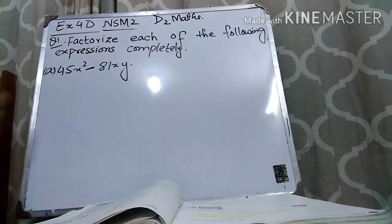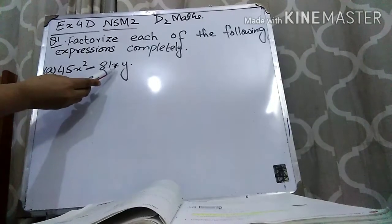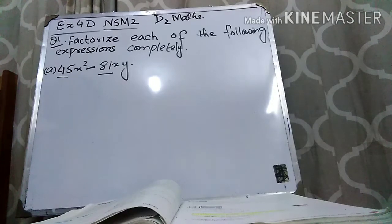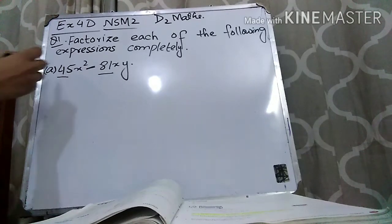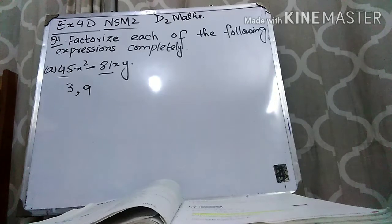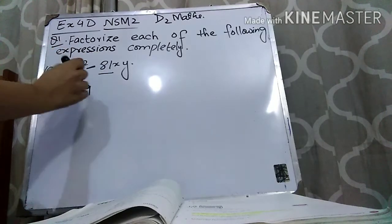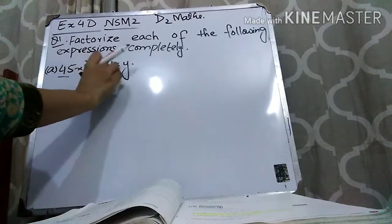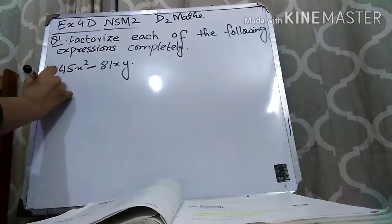First, see if there is any number common. You can see that X is present in both terms, so the variable X is common. Now see the numbers 45 and 81 — are they divisible by any number? Yes, 45 and 81 are divisible by 3 and 9. Whenever you take the common, always go for the greater number. Since these numbers are also divisible by 9, we will take 9 as the common factor.